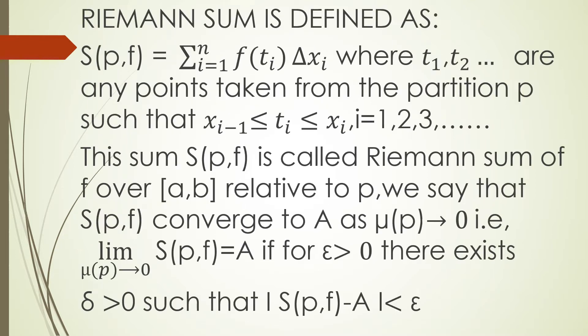So before coming to the problem, let's first understand what is Riemann sum. Riemann sum is defined as S(p,f) equals summation of f(ti) into Δxi where i is from 1 to n, where t1, t2 up to tn are any points taken from the partition p such that xi-1 ≤ ti ≤ xi where i equals 1 to n. This sum S(p,f) is called Riemann sum of f over closed interval [a,b] relative to p.